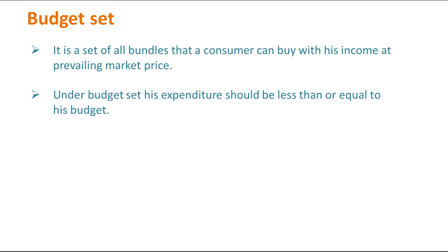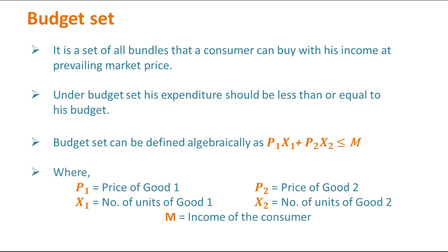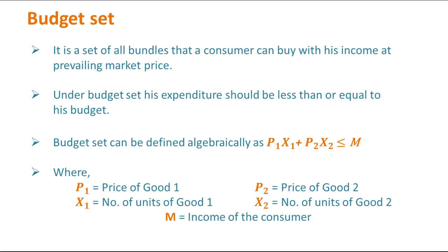Algebraically, we can represent the budget set as P1X1 plus P2X2 is less than or equal to M, where P1 represents the price of good one and X1 represents the number of units of good one.